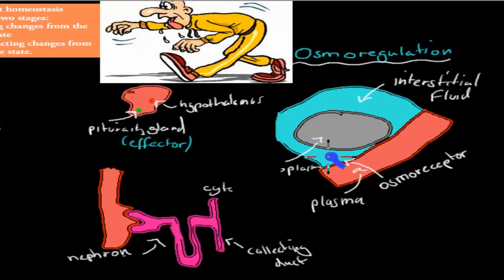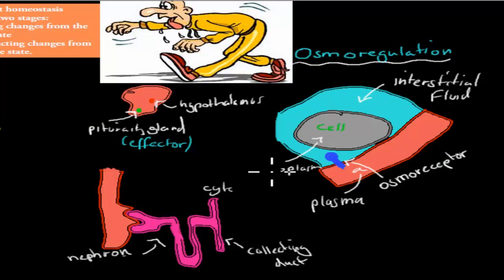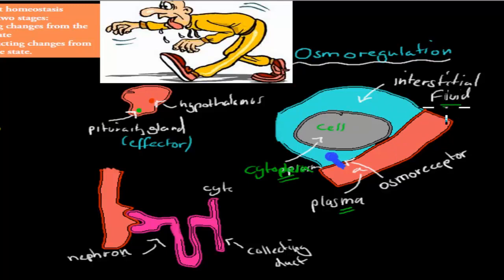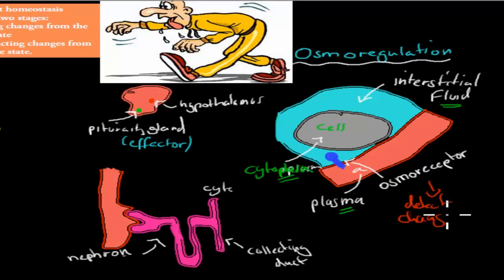Another example, which you'll learn in a couple of years' time, is osmoregulation — and that's also about water. Imagine we have water in our interstitial fluid, which is the fluid between the cells. Inside the cells we have cytoplasm, which is mostly water. We have plasma, which is mostly water. And the interstitial fluid between the blood vessels and the cells is also water — so we've got lots of water. These blue things here are osmoreceptors, which detect changes in water level.